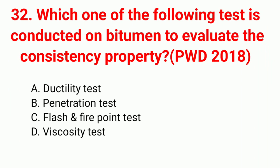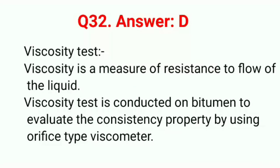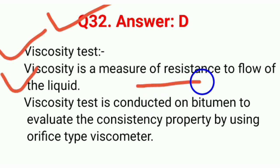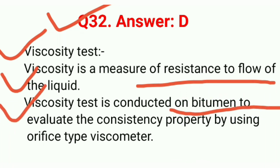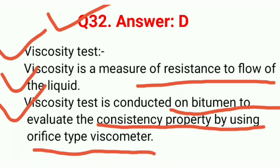Question 32: Which test is conducted on bitumen to evaluate the consistency property? Correct answer option D: viscosity test. Viscosity is the measure of resistance to flow of a liquid. The viscosity test is conducted on bitumen to evaluate the consistency property using an orifice type viscometer.